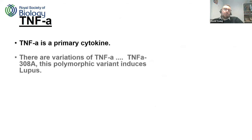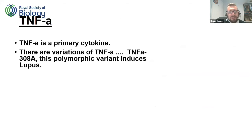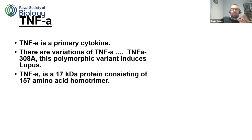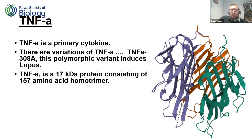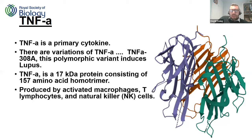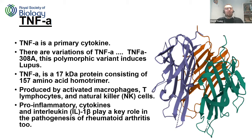Very briefly: tumour necrosis factor alpha (TNF-α) is a primary cytokine. Certain variations lead to TNF being implicated in different disorders — for example, a polymorphic variant at 308A induces systemic lupus, which is essentially like an arthritis. It's a reasonably small protein at 17 kilodaltons, a homo-trimer with three components, and it binds to tumour necrosis factor receptors 1 and 2. It often down-regulates gene expression for interleukin 4 and 8, and is produced by activated macrophages, T lymphocytes, natural killer cells, and other innate immune cells. It also plays a role similarly to interleukin 1β.